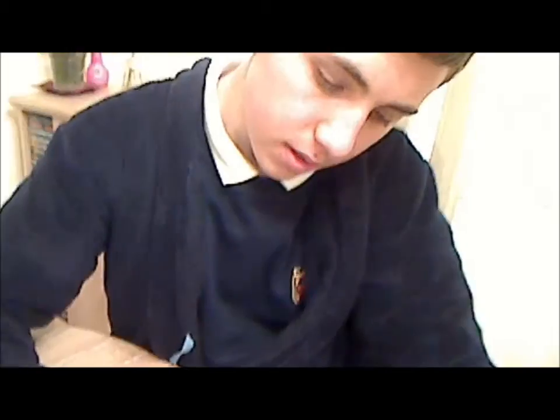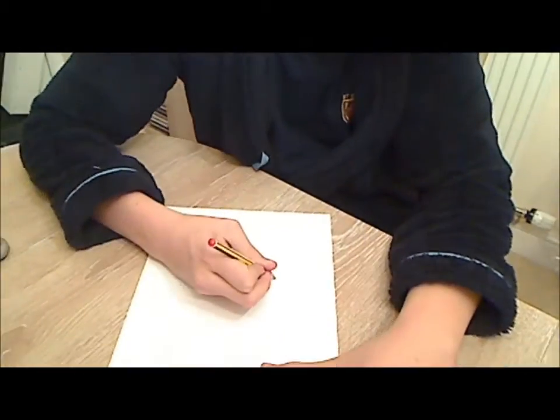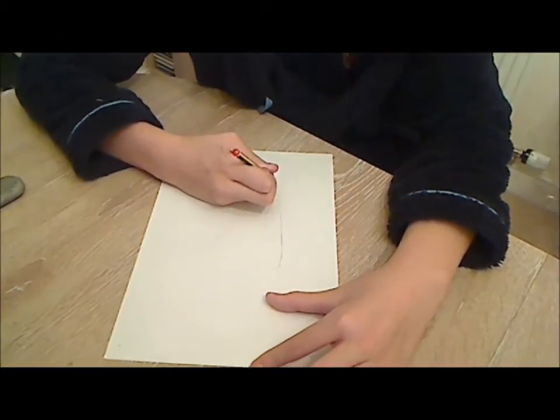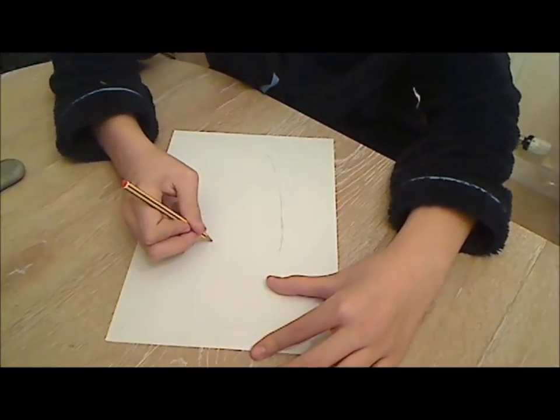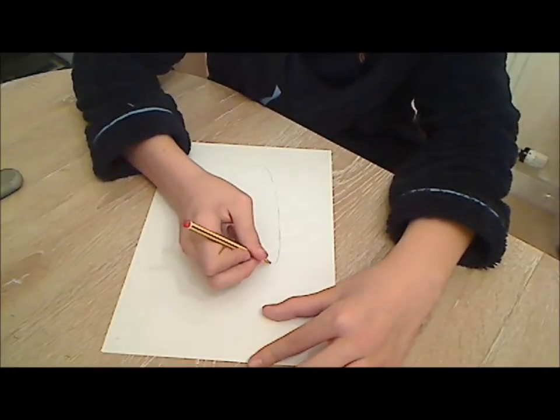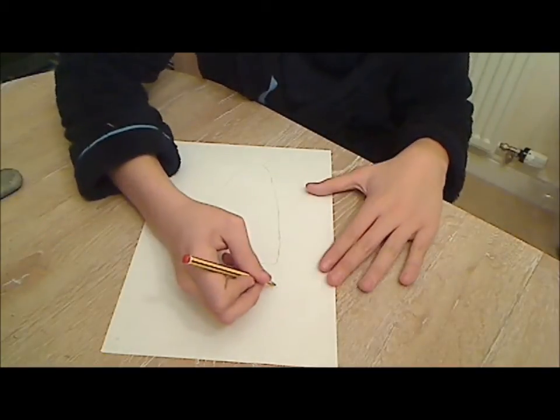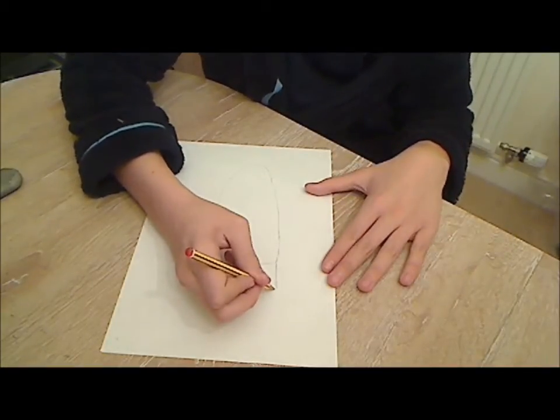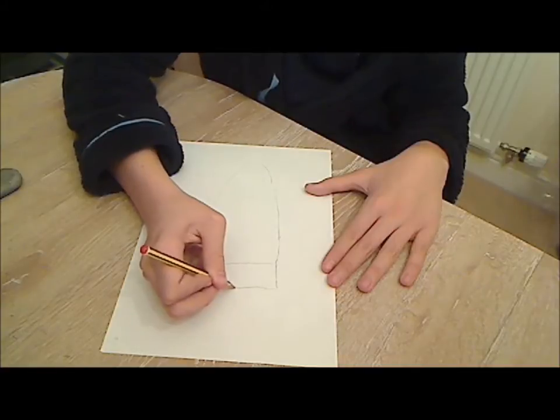Step 1. You want to start by drawing the beetle's wing protectors. Next, you want to draw the beetle's shoulders. This looks like a rectangle.